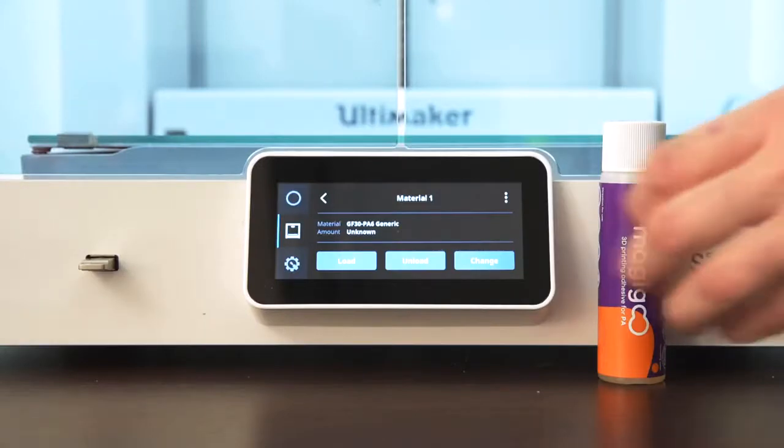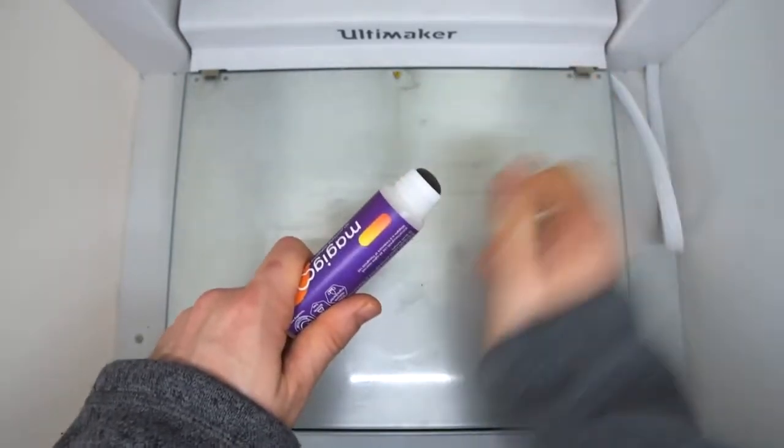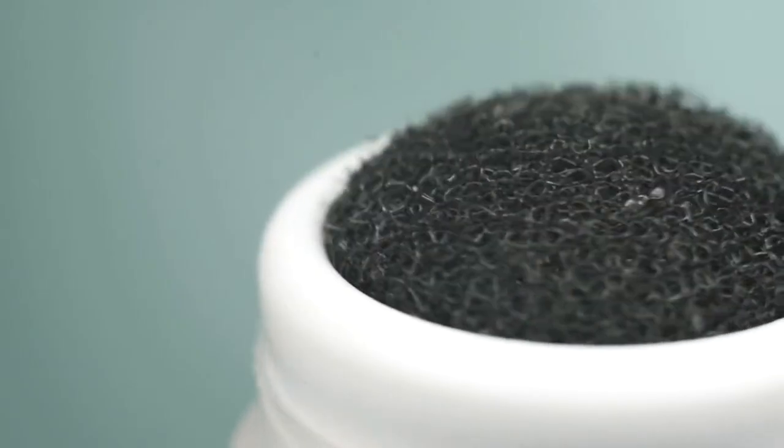Shake the Magigoo bottle like you mean it and open the cap. Magigoo applicator has a spring valve inside. To activate, press the applicator against a cold bed firmly to make the glue flow.